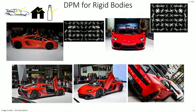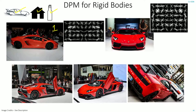For example, let's say you're training a Dalal-Triggs detector for a car. You use two different views — one is the side view and you train one detector for the front view. And this is how the filters look for the side view and front view respectively.